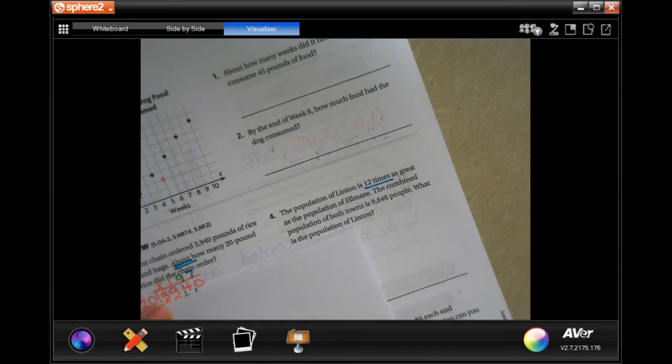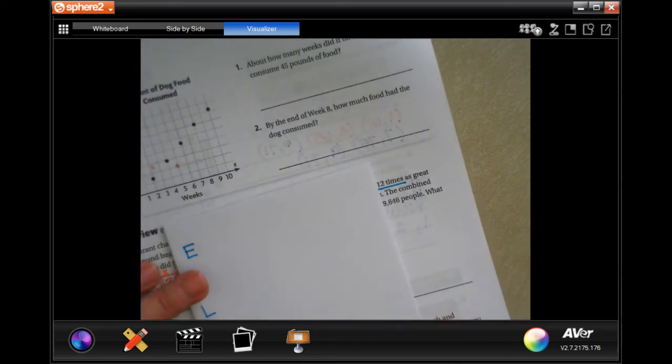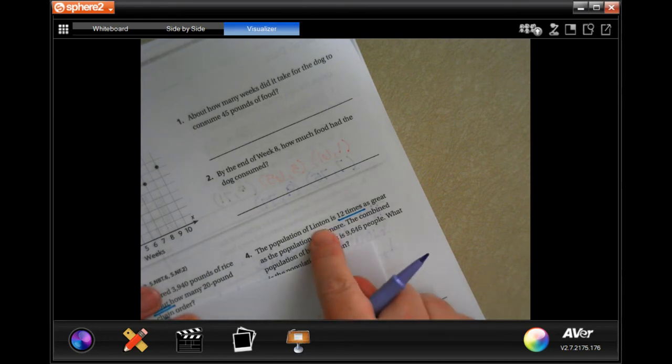So it says if Elmore has one block, then Linton has twelve.